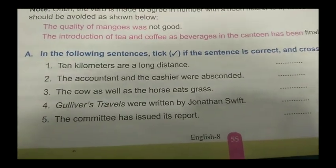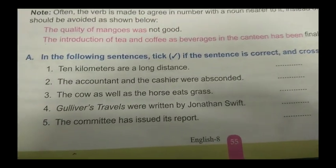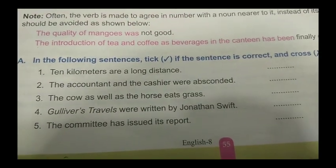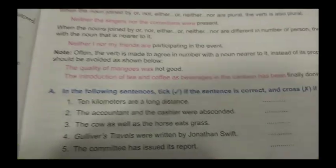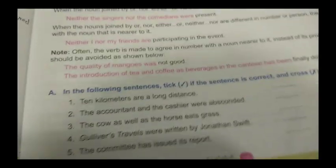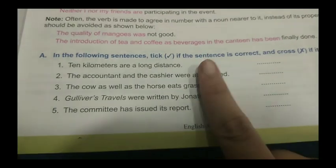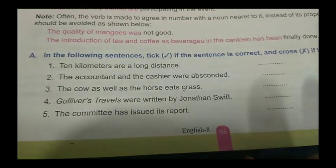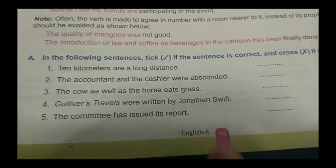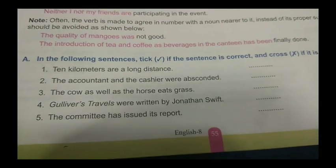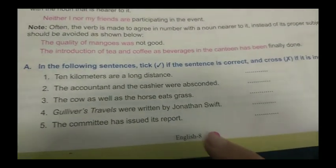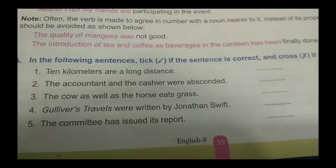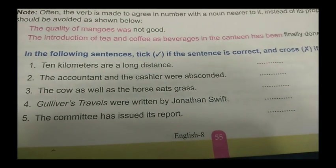In the following sentences, tick if the sentence is correct and put a cross if it is incorrect. We have to mark right or wrong in front of each sentence — if the sentence is correct, put a tick; if it is wrong, put a cross.